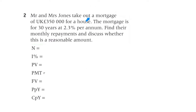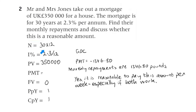Question two. Mr and Mrs Jones take out a mortgage of 350,000 UK pounds for a house. The mortgage is for 30 years at 2.3% per annum. Find their monthly repayments and discuss whether this is a reasonable amount. We set up the calculator with N as 30 times 12 and the interest rate divided by 12 to get the monthly rate.